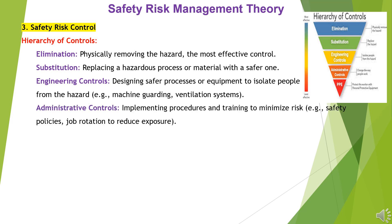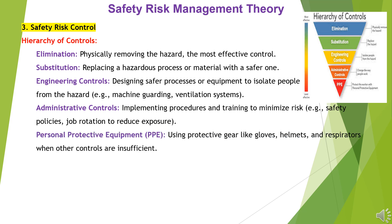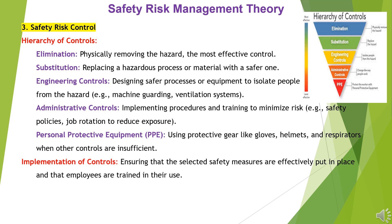Administrative Controls: implementing procedures and training to minimize risk, e.g., safety policies and job rotation to reduce exposure. Personal Protective Equipment (PPE): using protective gear like gloves, helmets, and respirators when other controls are insufficient. Implementation of controls ensures that selected safety measures are effectively put in place and that employees are trained in their use.